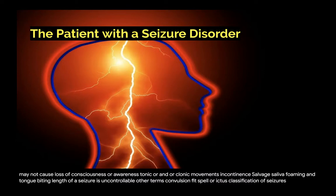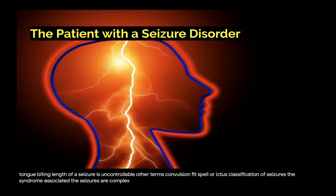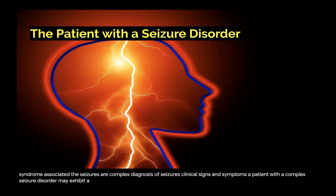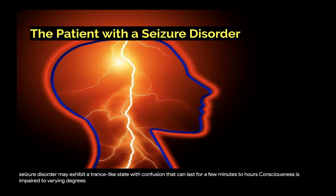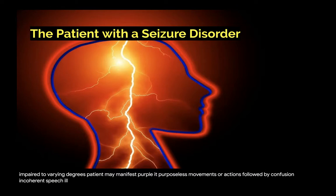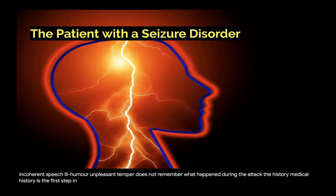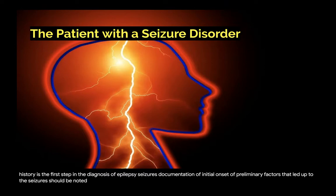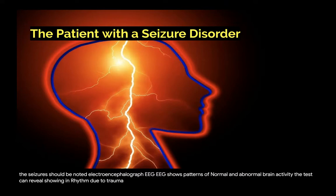The syndrome associated with seizures is complex. A patient with a complex seizure disorder may exhibit a trance-like state with confusion lasting from a few minutes to hours. Consciousness is impaired to varying degrees. The patient may manifest purposeless movements, incoherent speech, ill humor, or unpleasant temper, and does not remember what happened during the attack. Medical history is the first step in the diagnosis of epilepsy seizures, and documentation of initial onset and preliminary factors should be noted. An EEG shows patterns of normal and abnormal brain activity and can reveal slowing in rhythm due to trauma, stroke, brain tumor, or seizures.